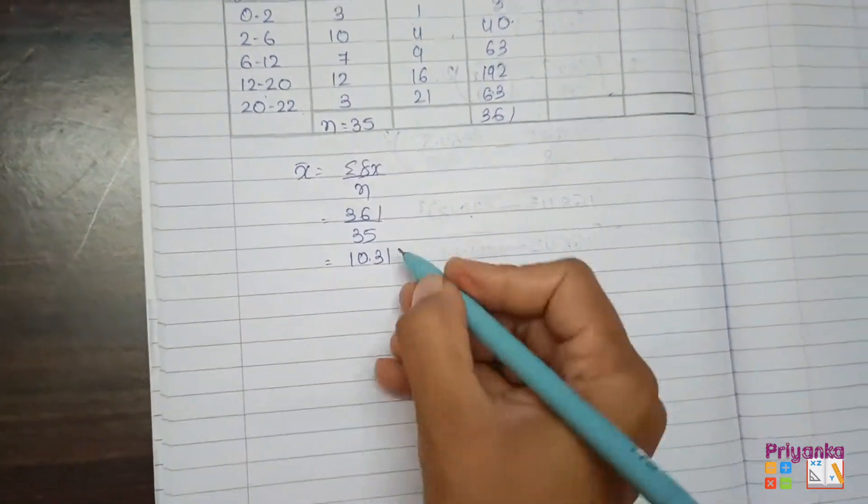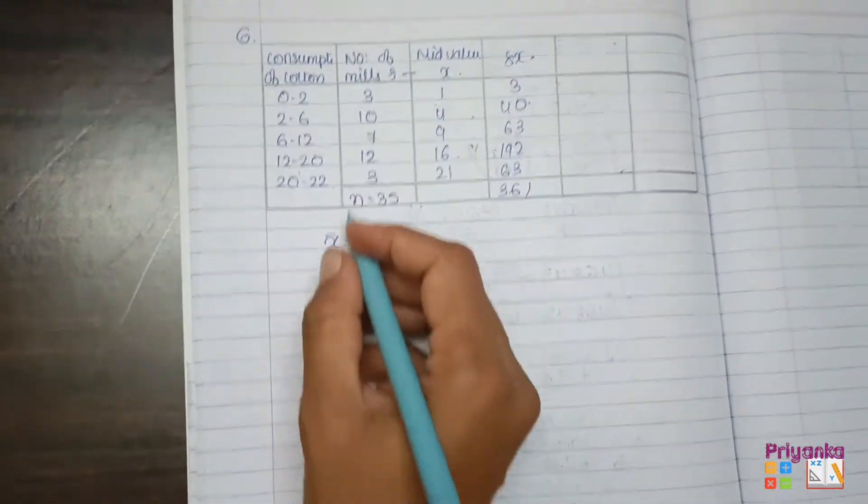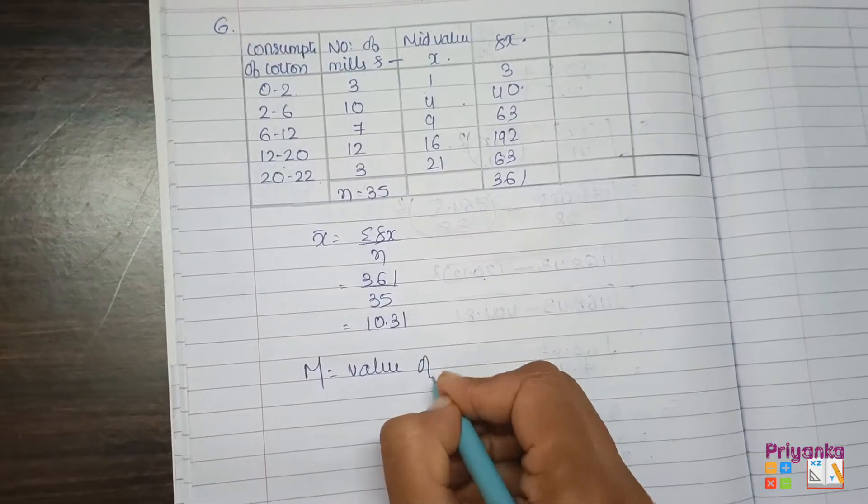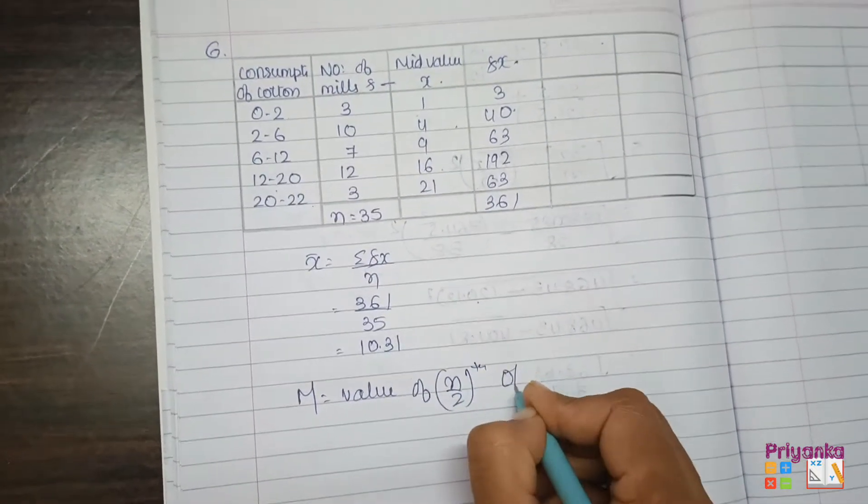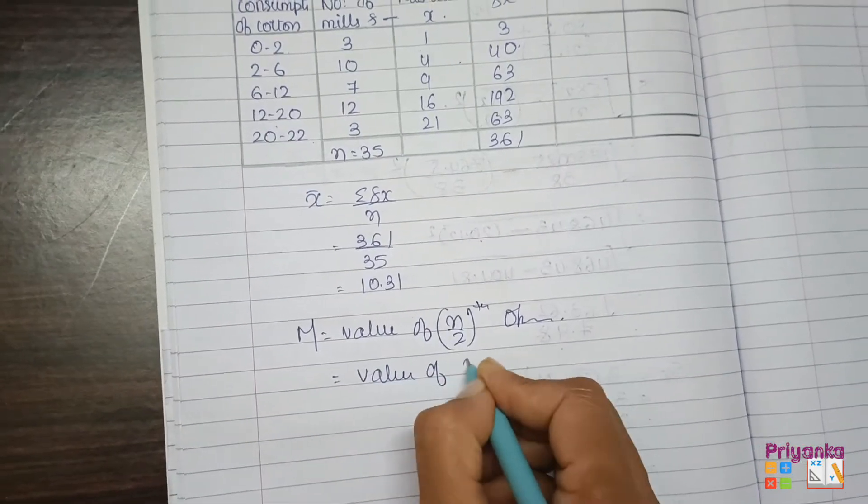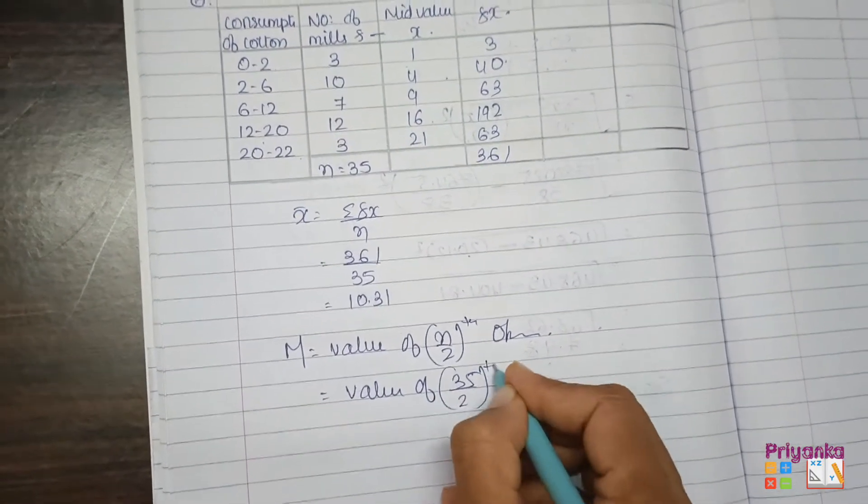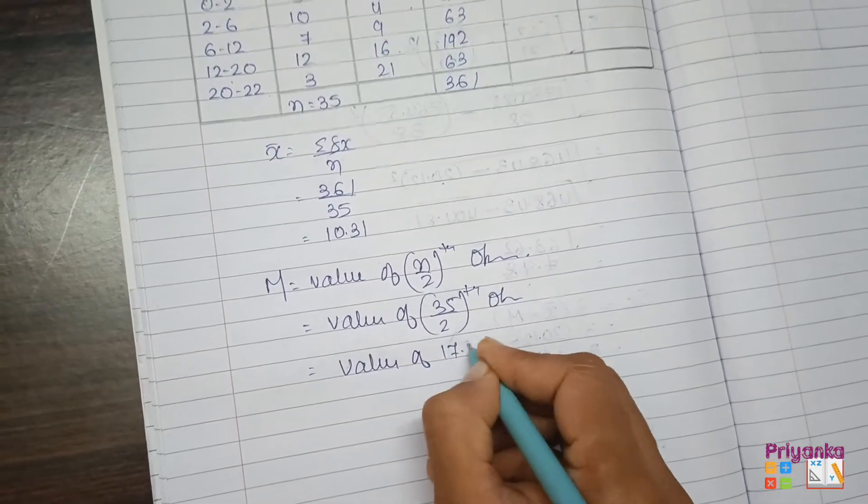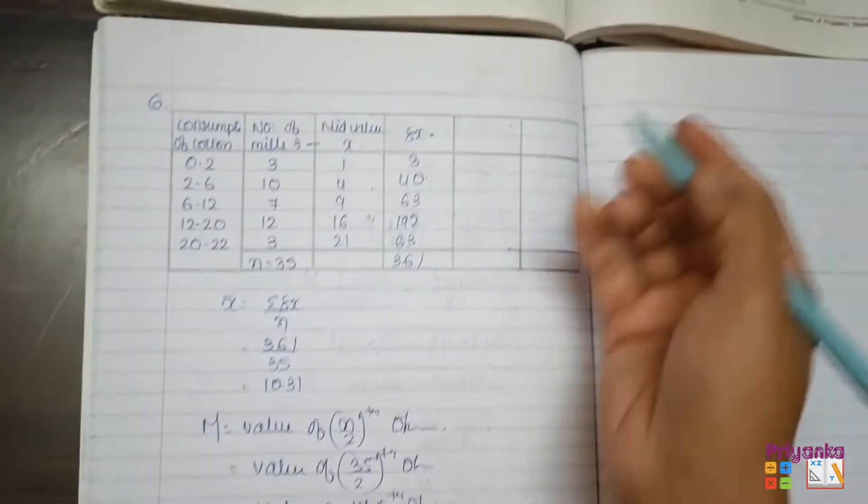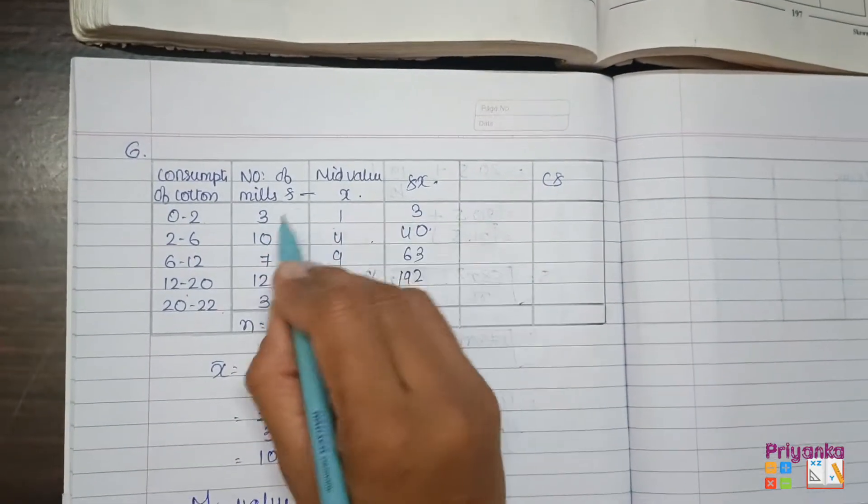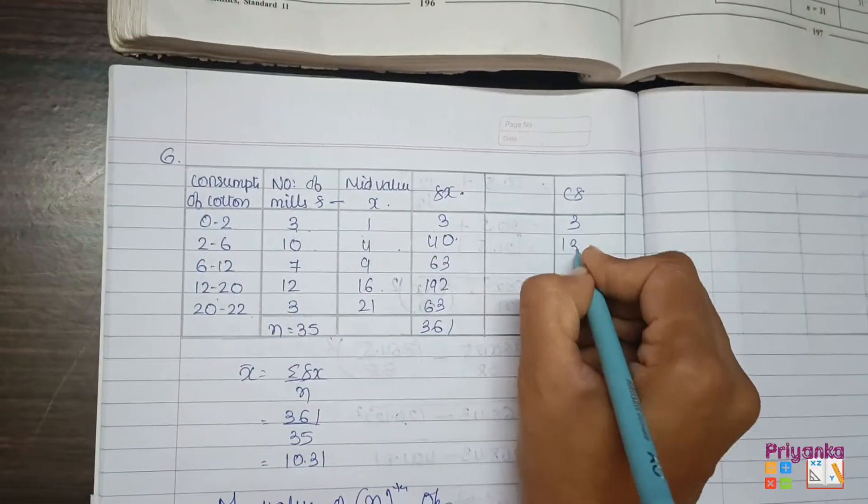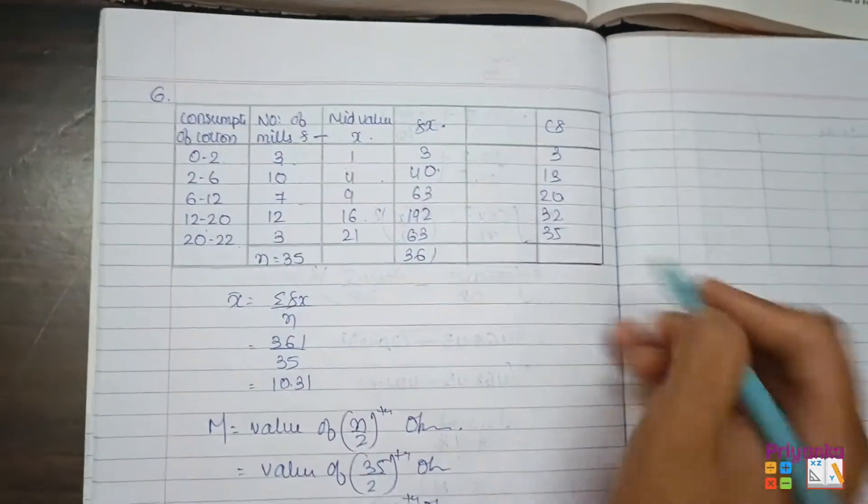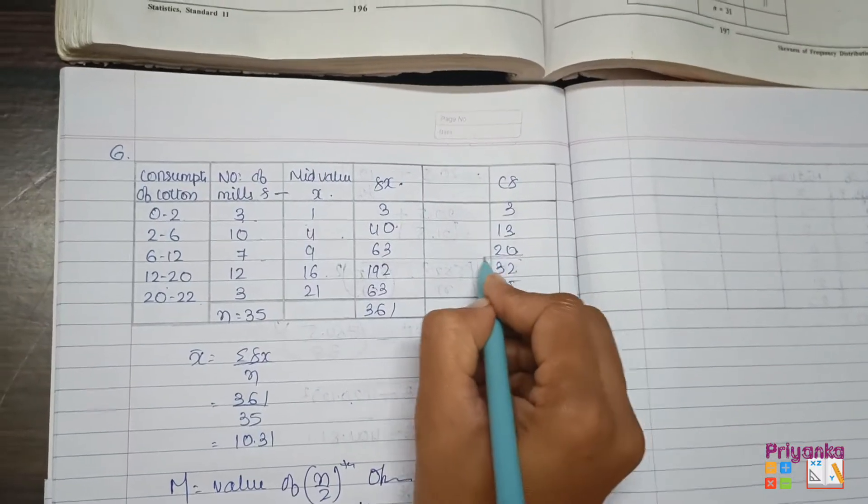Next, since these are unequal observations, we will find out median. Since this is continuous frequency, remember the formula for continuous frequency. The value of n is thirty-five upon two. We have to find out the value of thirty-five divided by two, that is seventeen point five observation. So for the median we need cf column. Look at the frequency: three, three plus ten is thirteen, plus seven is twenty, twenty plus twelve is thirty-two, plus three is thirty-five. So our cf is ready. Median is at seventeen point five, which comes in twenty.